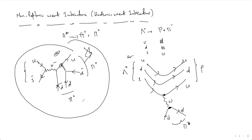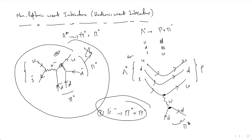Another example in this category is K-minus decaying to pi-zero plus pi-minus. You can draw the Feynman diagram for this process yourself.